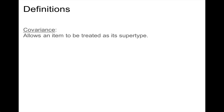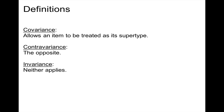Let's start with some definitions. Covariance allows an item to be treated as its supertype. Contravariance is the opposite of that. And invariance means that neither of these terms applies.